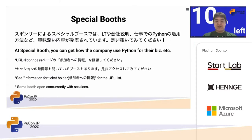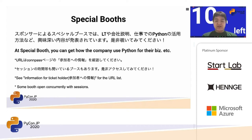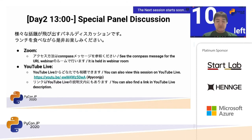This is an announcement for attendees from YouTube live. The hashtag for this room is PyConJP number five. Please feel free to tweet your thoughts and observations with the hashtag.